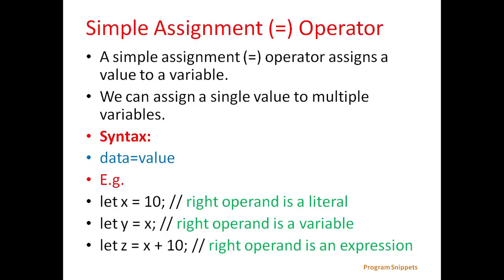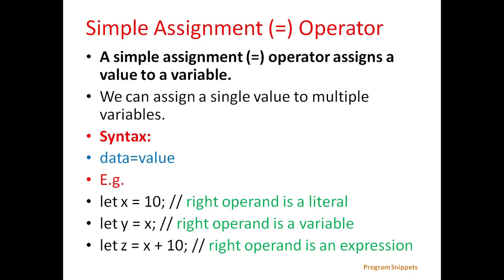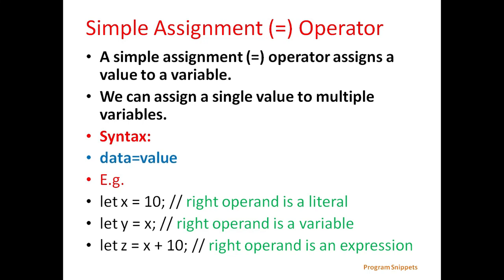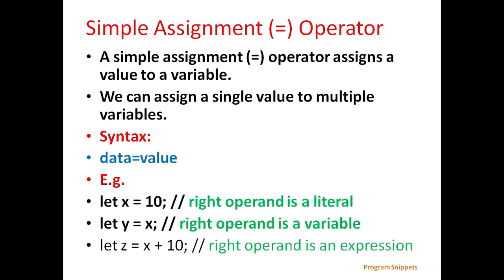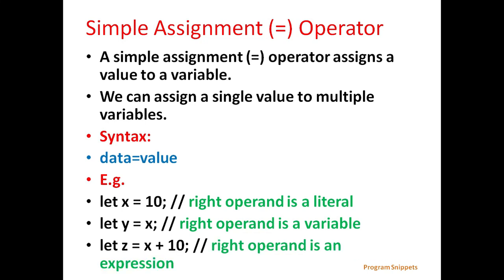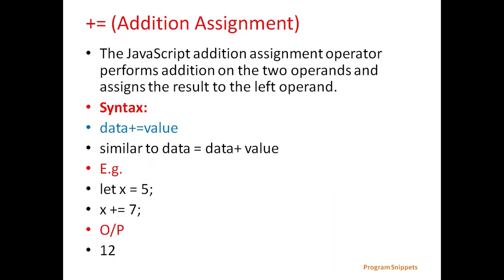First is the simple assignment operator. A simple assignment operator assigns a value to a variable, and we can assign a single value to multiple variables. General syntax is: data = value. For example: let x = 10, where the right operand is a literal; let y = x, where the right operand is a variable; and let z = x + 10, where the right operand is an expression.